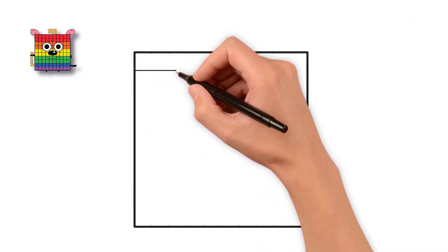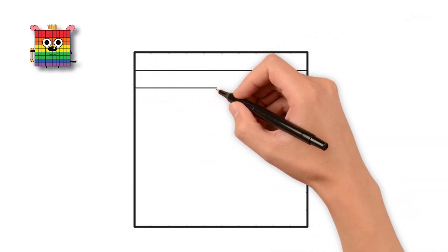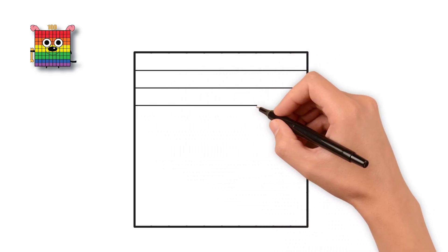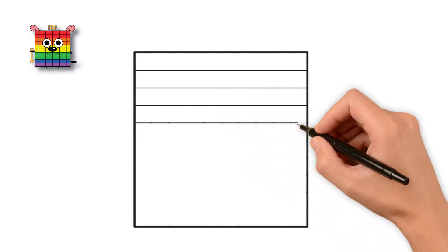Now that we have the big rectangle body, let's turn it into little blocks. First, let's draw the horizontal lines. Start at the top. Keep going! Nice and steady.